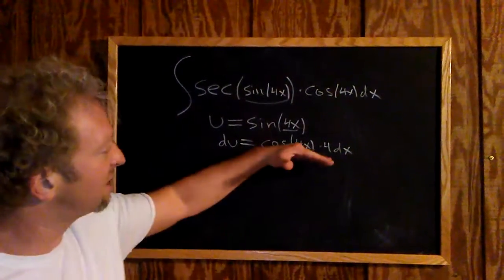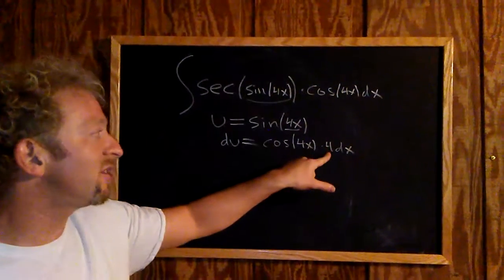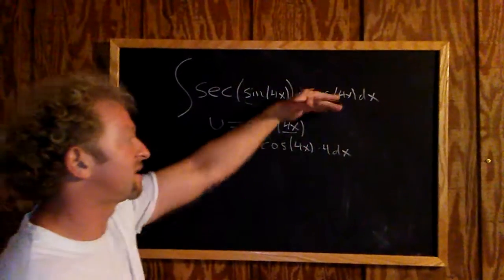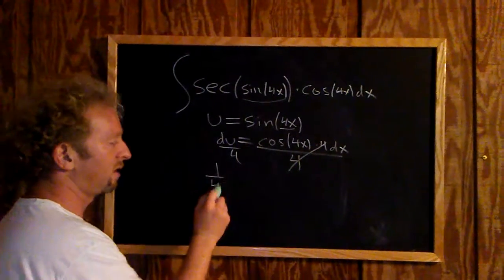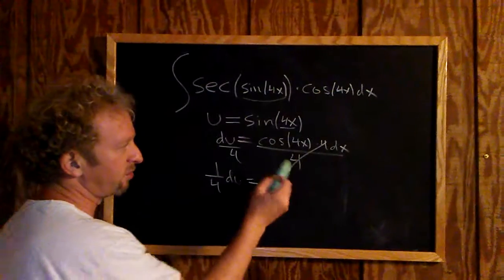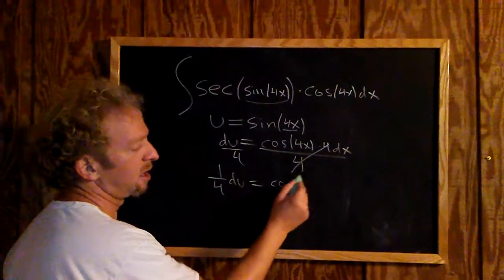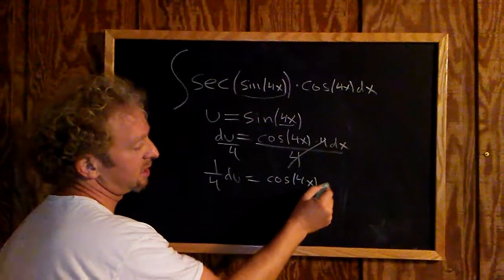To finish, we have to make this match. We divide by the 4, so one-fourth du equals cosine 4x dx.